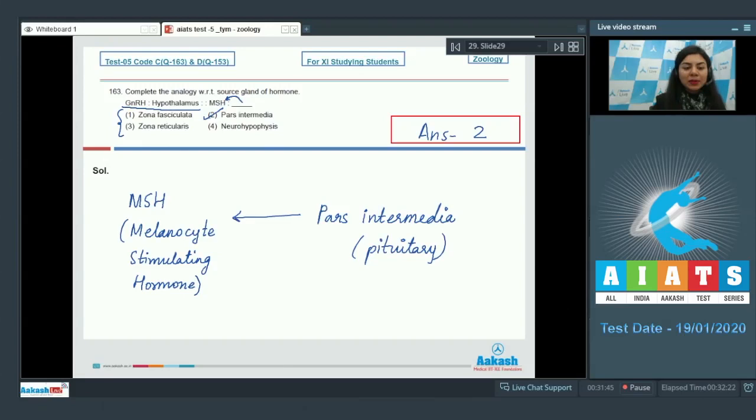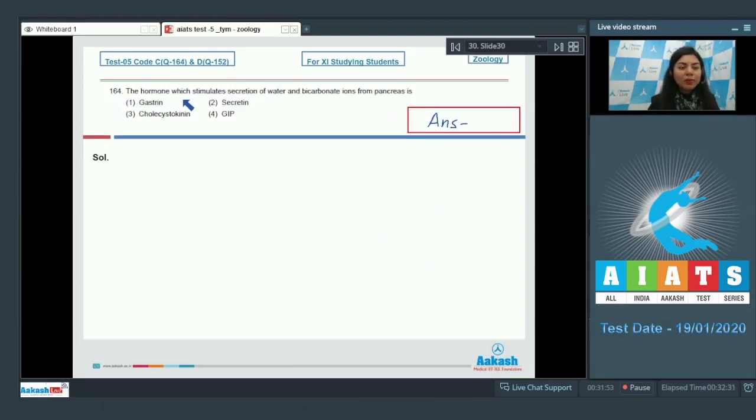Question 164: The hormone which stimulates secretion of water and bicarbonate ions from pancreas is gastrin, secretin, cholecystokinin, or GIP, that is gastric inhibitory peptide.